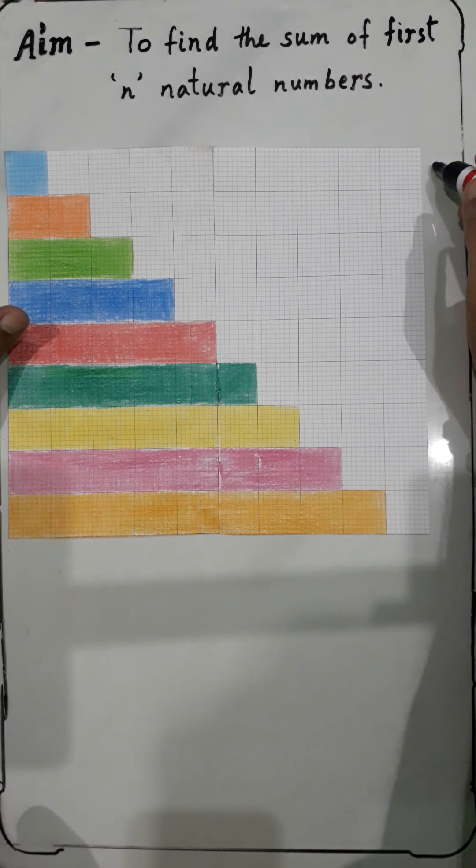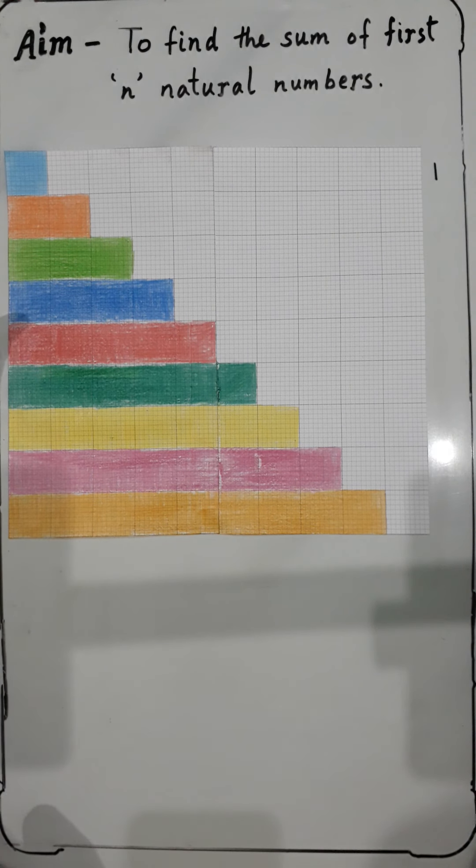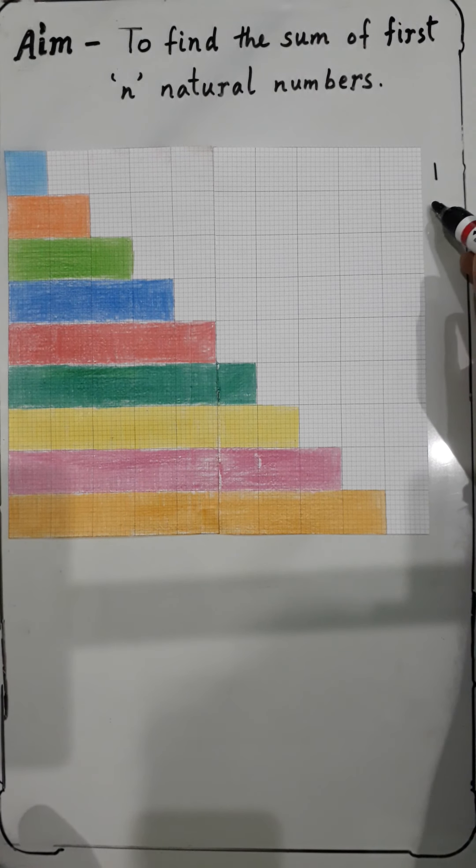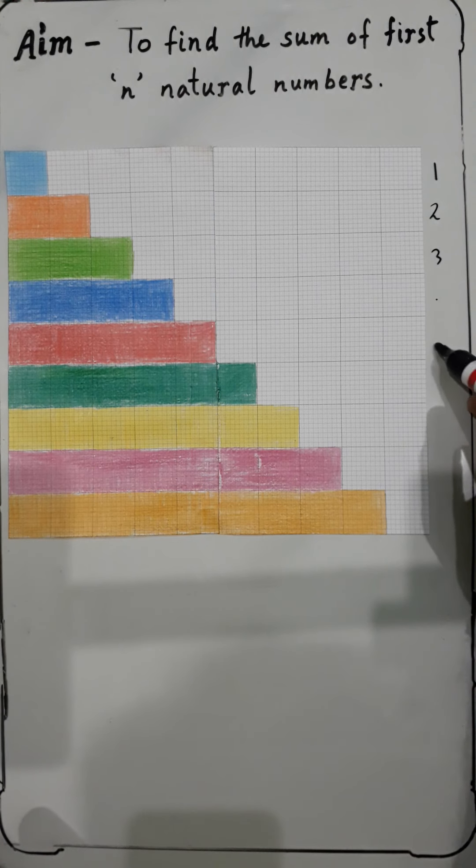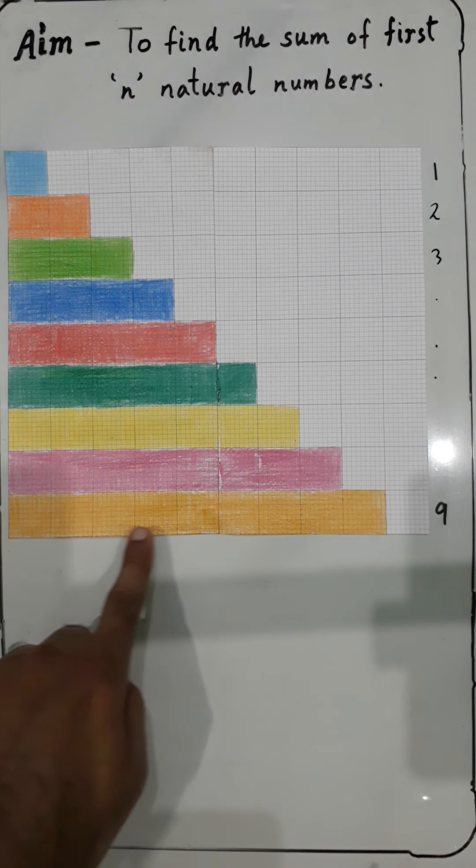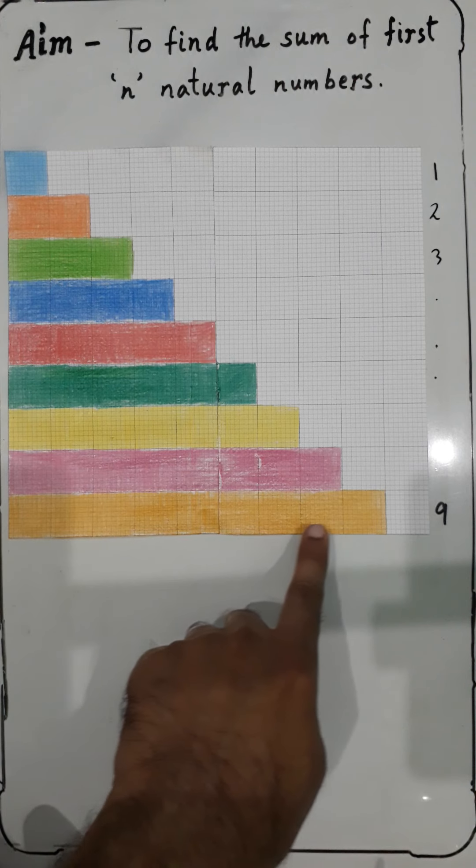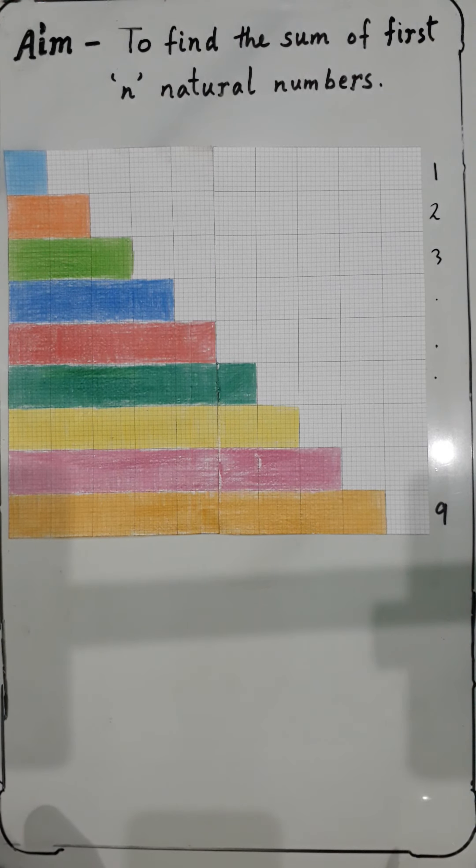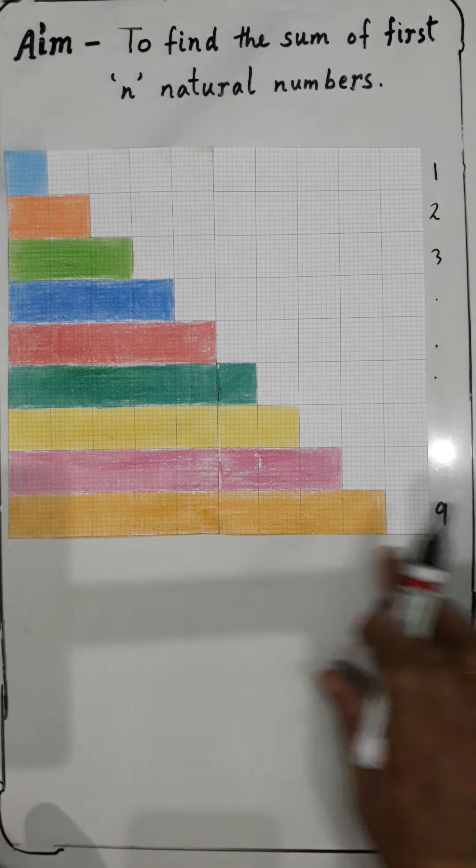If you observe here, I have colored one square, then two squares, then three, then four, five, six, seven, eight, and over here I have colored nine squares: one, two, three, four, five, six, seven, eight, and nine.